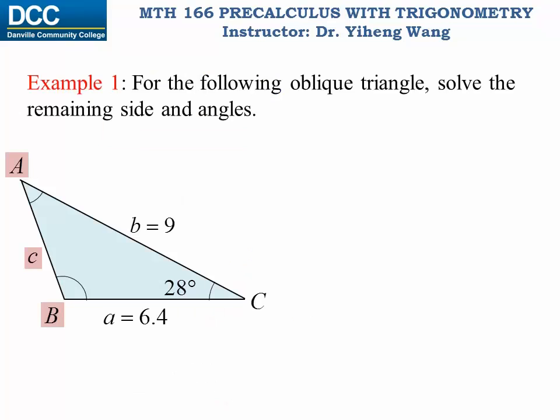Let's look at this example. In this triangle, we know two sides a and b, and the angle c between them. This is the SAS case. We need to solve for the remaining side and the two remaining angles. Since we do not know any pair of parameters, we cannot apply Law of Sines — so we must apply Law of Cosines.